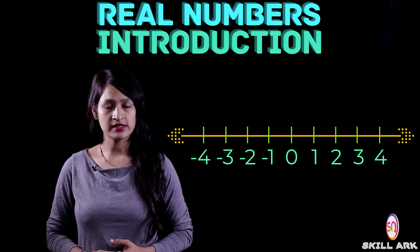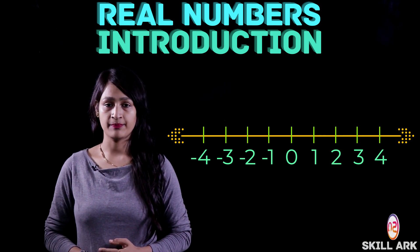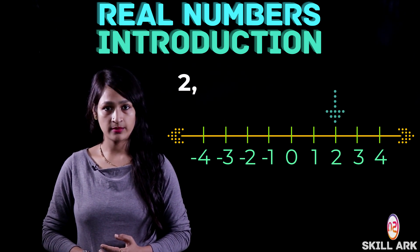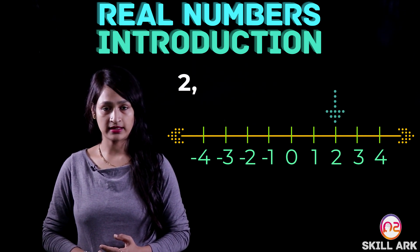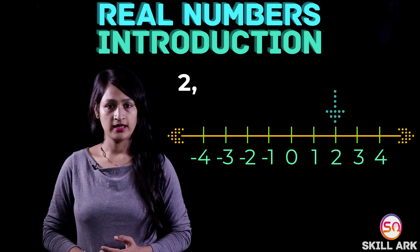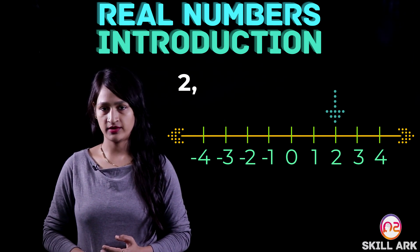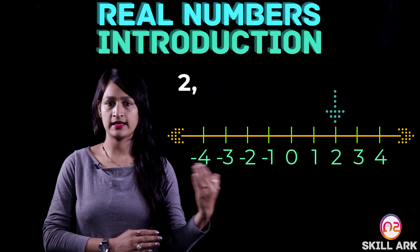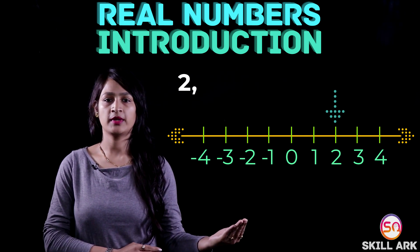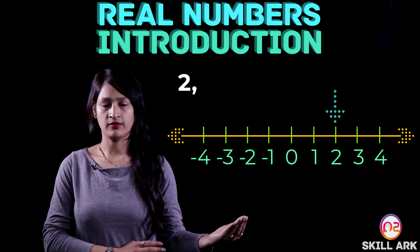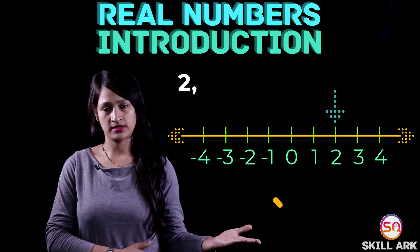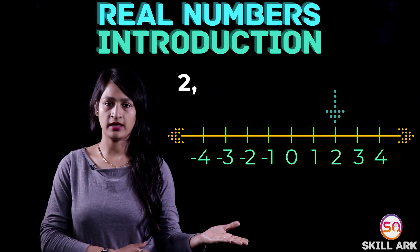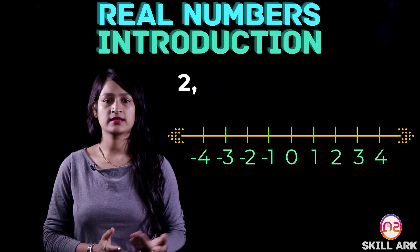Now we will take some examples and plot them. First of all, we will take 2. Can we plot 2 on this number line? Let's see. 2 is a positive number, so we will go to the positive side. After 0 comes 1 and then 2. So we plot 2 on this number line. This means 2 is a real number.